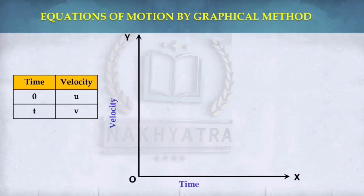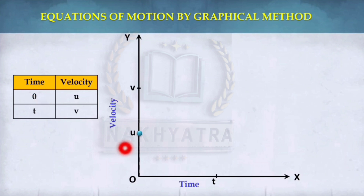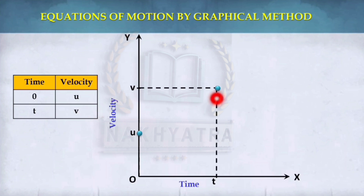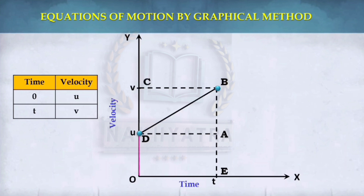On the x-axis we consider time, and on the y-axis we plot the value for velocity. Time T is on the x-axis and velocities U and V — the initial and final velocity — are on the y-axis. When time is 0, the velocity is U, so we plot that point. When time is T, we plot velocity V. Join the two points and consider the rectangle A, B, C, D. From here we will find the equation by graphical method.